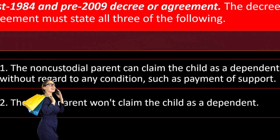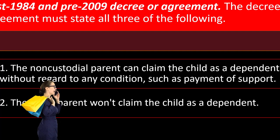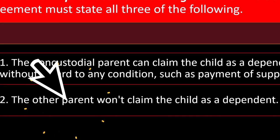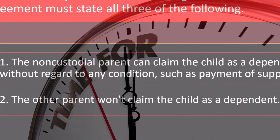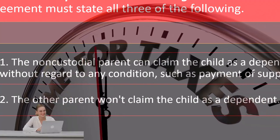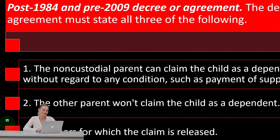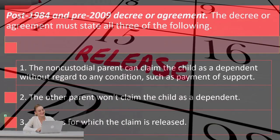Two: the other parent won't claim the child as a dependent. Obviously that has to be part of the agreement, because you don't want both people racing to file their return first to claim the dependent and get into a fight over it — nobody wins that situation except the lawyers. Three: the years for which the claim is released, so you want defined terms on it.